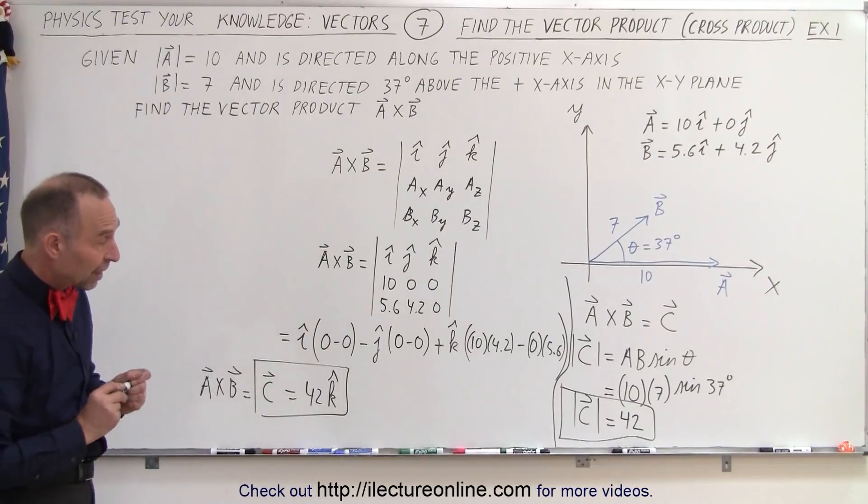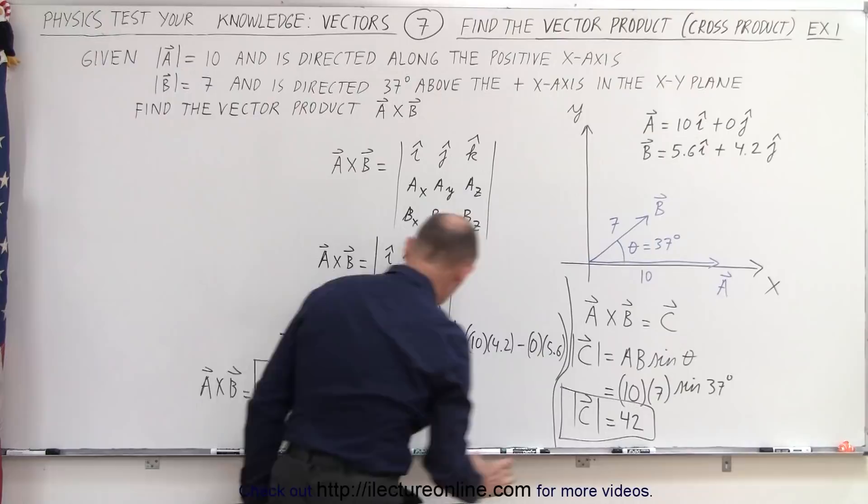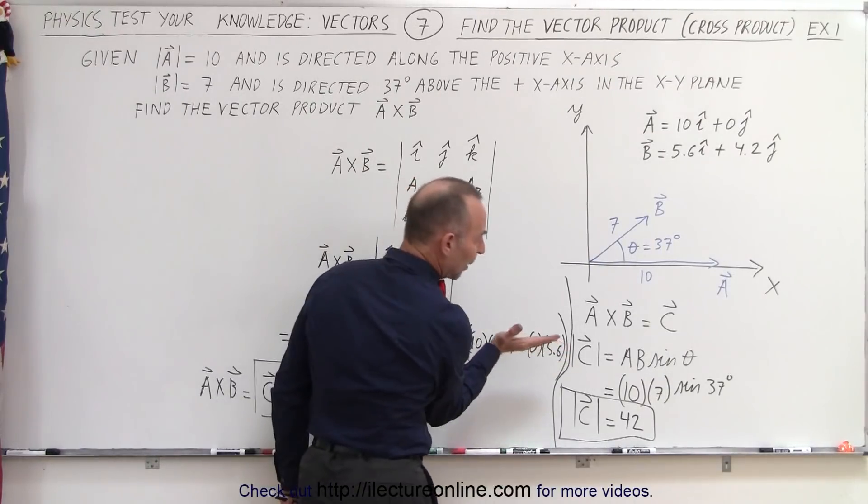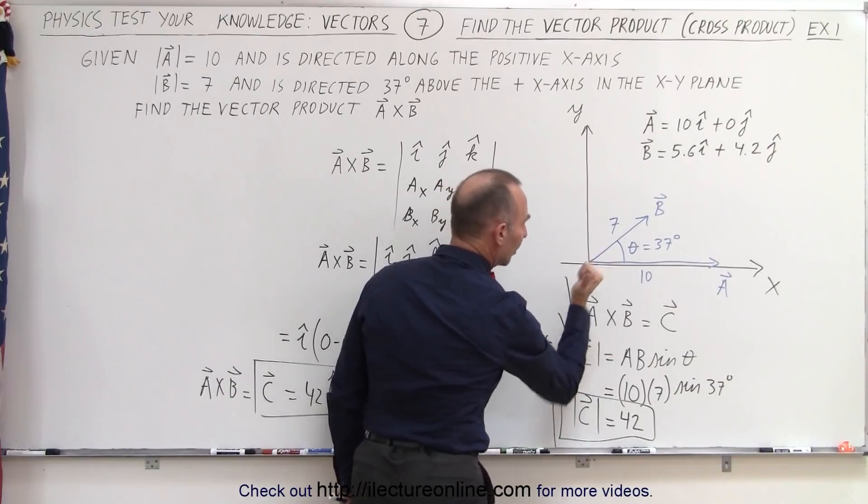Now, let's take a look over here. We already got the magnitude. We have the magnitude as 42, which is the same what we got over here.